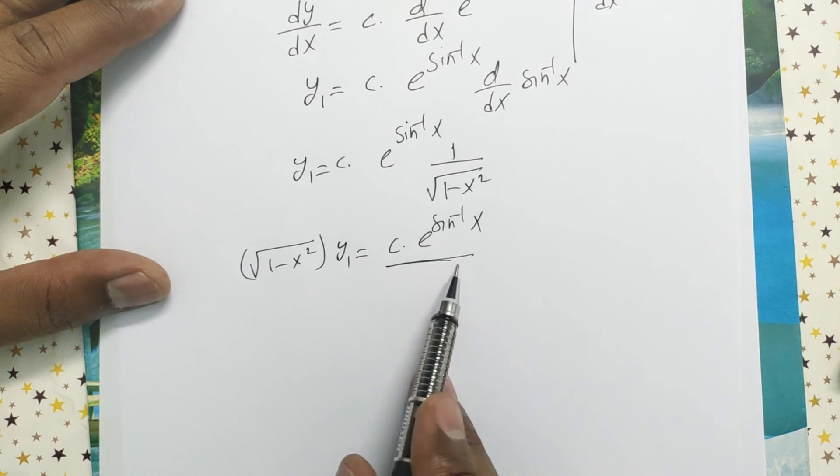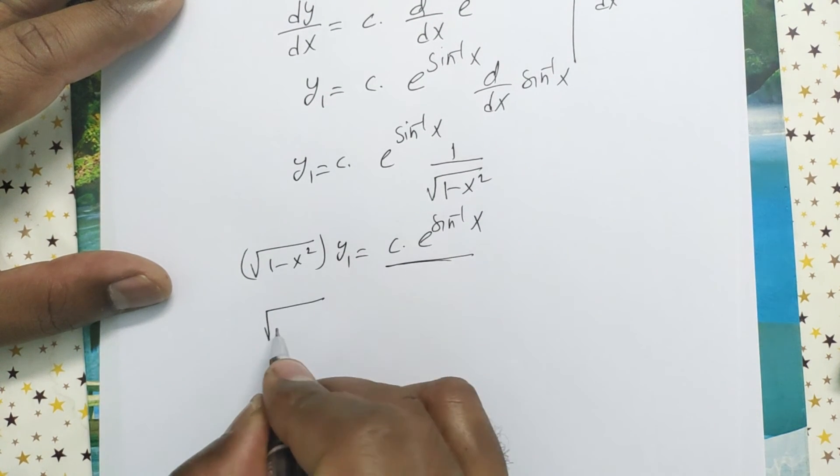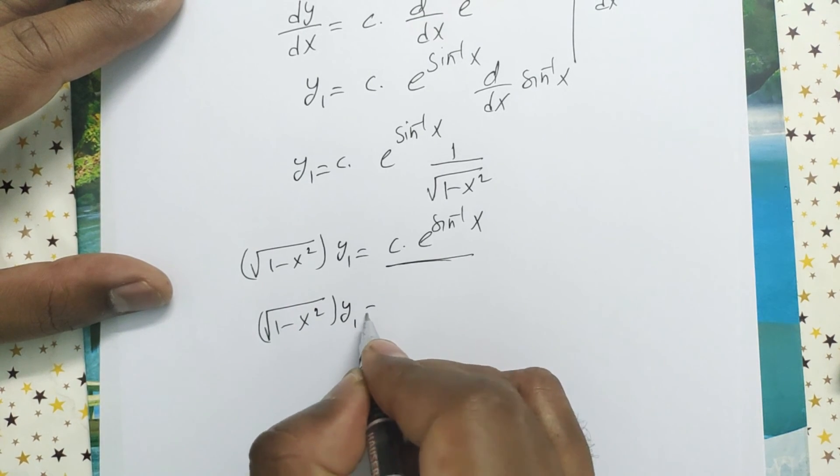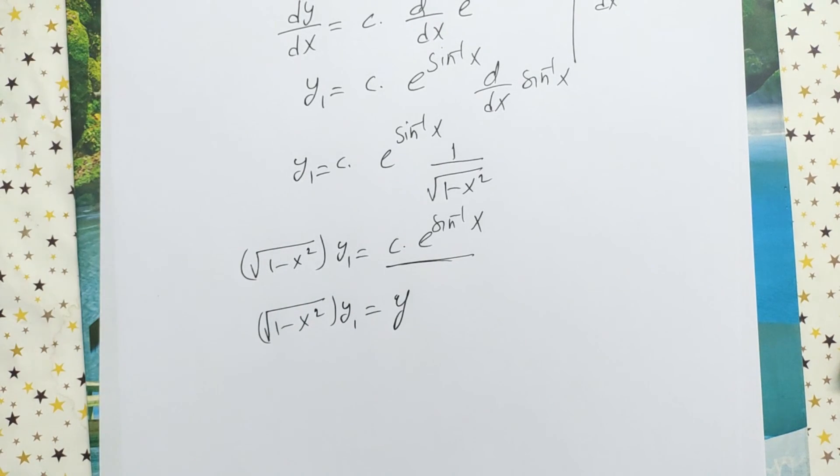Now in place of this one, you can write y. That is root of 1 minus x square times y1 equals y. This is our answer.